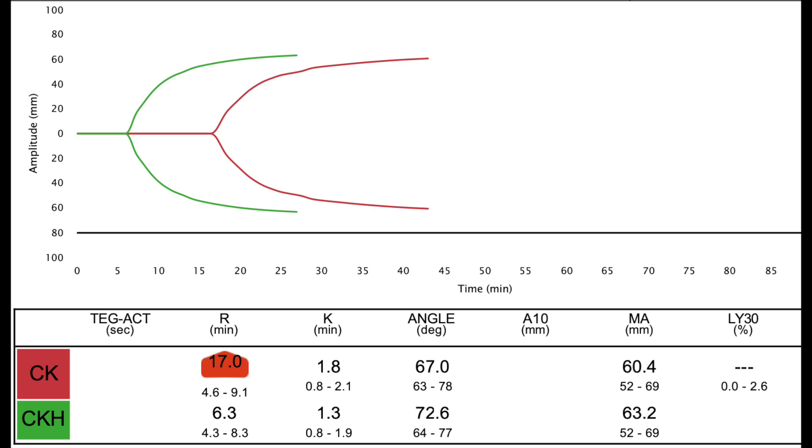Second one is K time. The K value is a time from the end of the R time until the clot reaches 20 mm and this represents the speed of clot formation. This will depend on the fibrinogen.